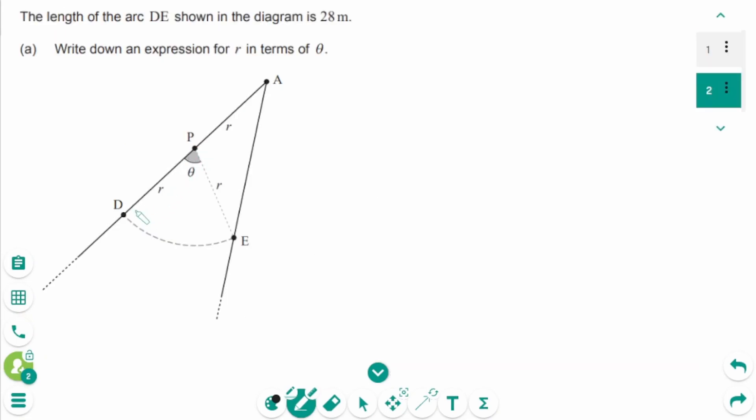From the sector DPE, the arc length DE is 28. Use the formula A equals R theta. So 28 equals R times theta. Then divide by theta on each side, so R equals 28 over theta.